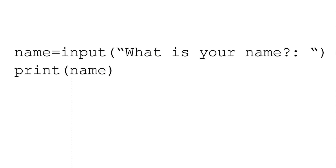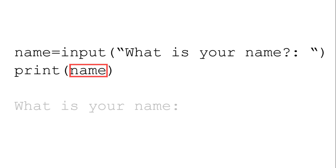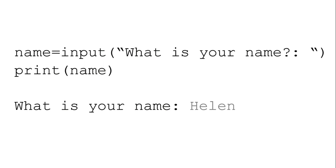The second line of code will display whatever is being stored by the variable name. It's important to remember that it will not display the word name, but what's stored by the variable name. When the program is run, the program will ask the user their name. Whatever the user enters will be stored by the variable name, and the program will then display whatever is being stored by the variable.